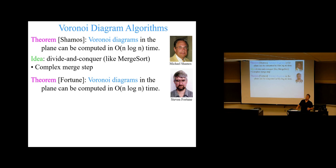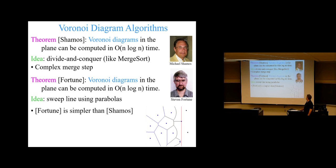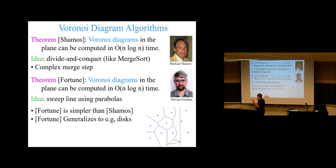There's a much simpler algorithm — simpler than Shamos's — by Steve Fortune from the 1980s. He showed how to compute the Voronoi diagram in n log n time based on parabolas and a sweeping line algorithm. The sweeping line algorithm sweeps across the point set from left to right and, as it does so, builds the Voronoi diagram using parabolas. It's still too complicated to fully explain here even though it's simpler. It generalizes to other objects — not just points, but disks and even segments.